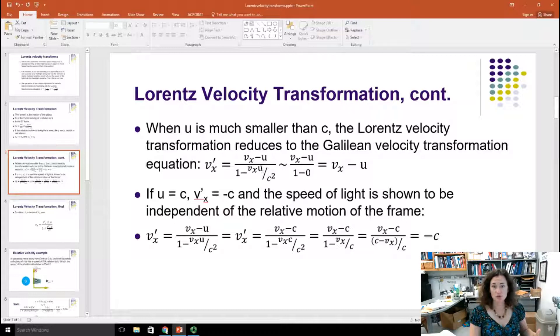What happens is if your speed U is really low, then the ratio U over C goes to pretty much zero. And so this second term in the denominator, that VX U over C squared, that goes to zero. And then you're just dividing by one, and you end up with VX minus U again. And that's the Galilean velocity transformation equation.